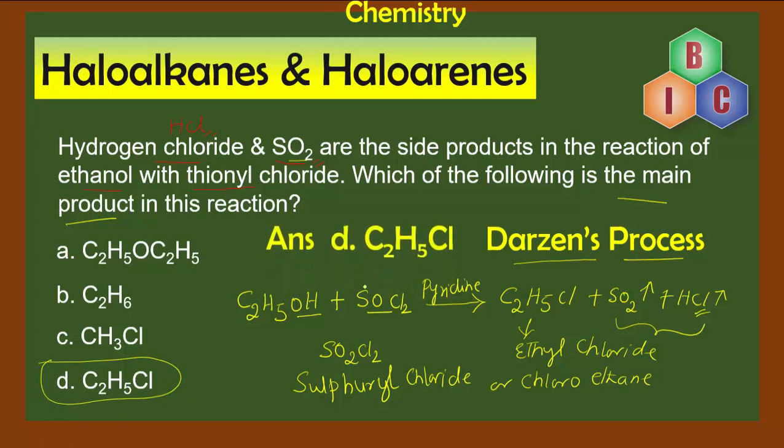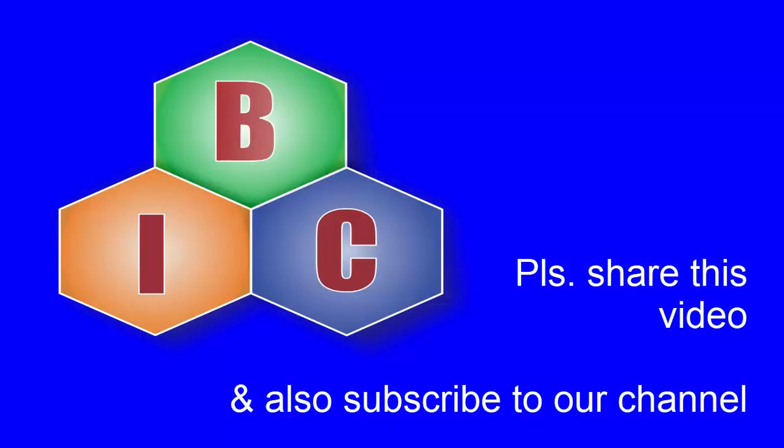The option is option D, which is our correct answer: ethyl chloride. This was a very simple question. We are going to discuss simple ones, tough ones, and not-so-very-easy ones—all three different varieties of questions from haloalkanes and haloarenes. I want you all to keep watching all the episodes, keep learning and improving your scores. I wish you all the best, but please remember to subscribe to our channel and share this video.